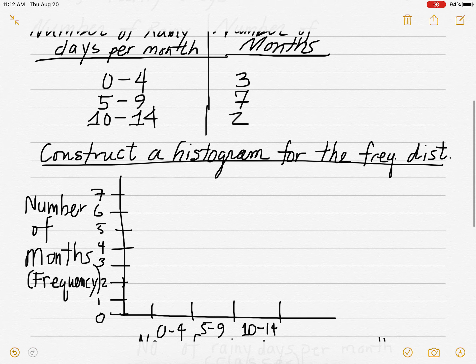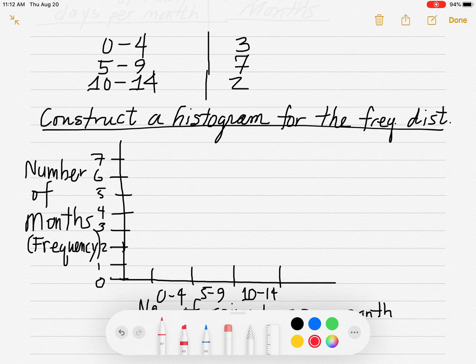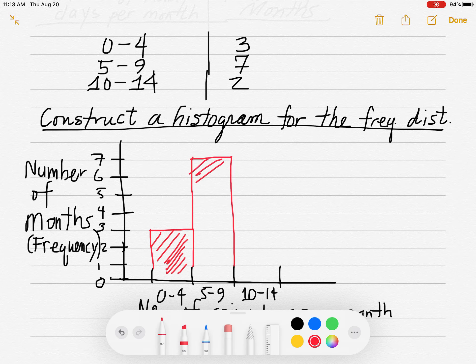All right. So for the first class from zero to four rainy days, we have three months. So we're going to create a bar. You have three months. And for five to nine rainy days, how many months? There's seven months. So we're going to create a bar that goes up to seven. Normally, I would want to use a ruler for this and make this nice and neat, but I don't have that option on the iPad. So I'll try to be as neat as I can. Now you don't have to shade the bars. I just like to shade. You can leave them open bars. You don't have to shade them. So either way is fine.